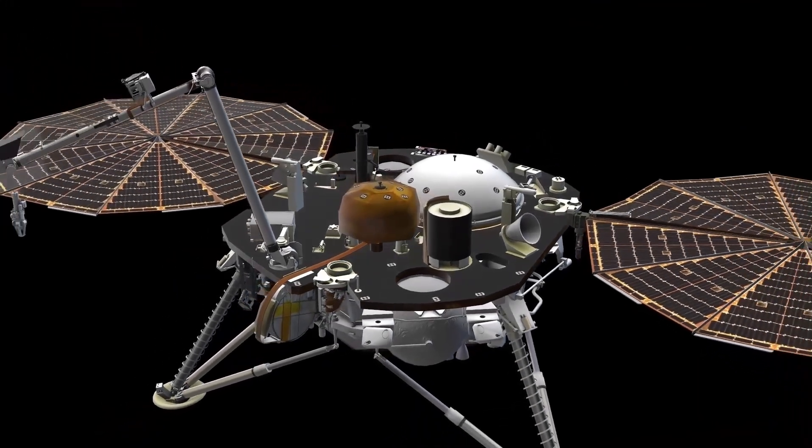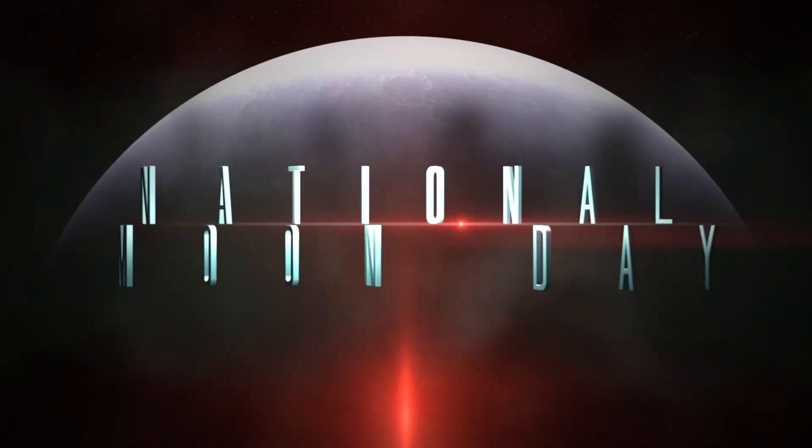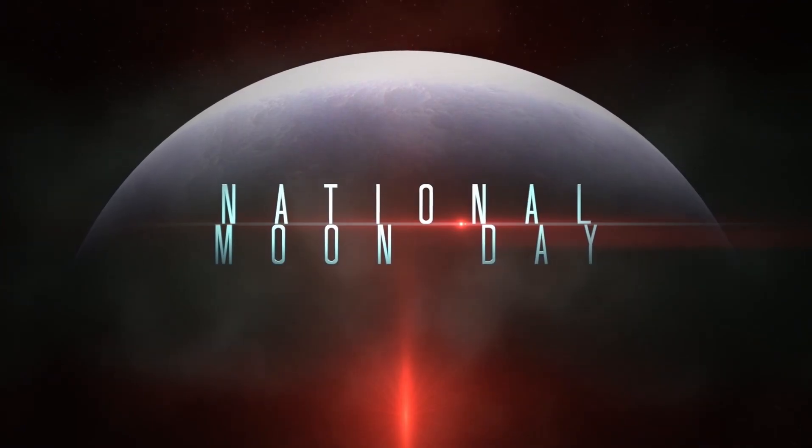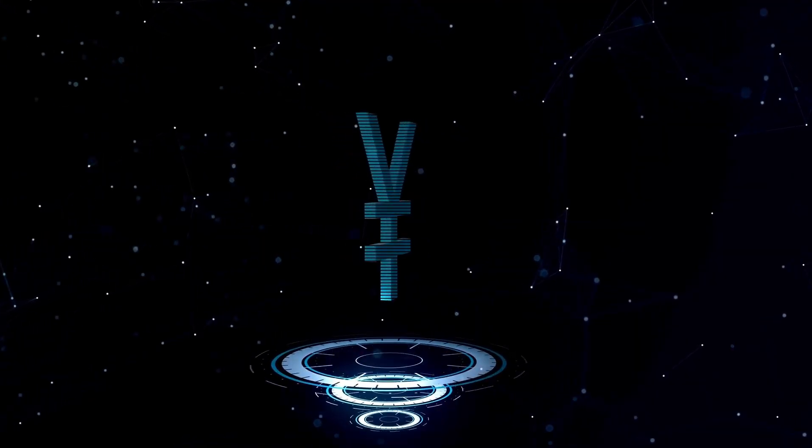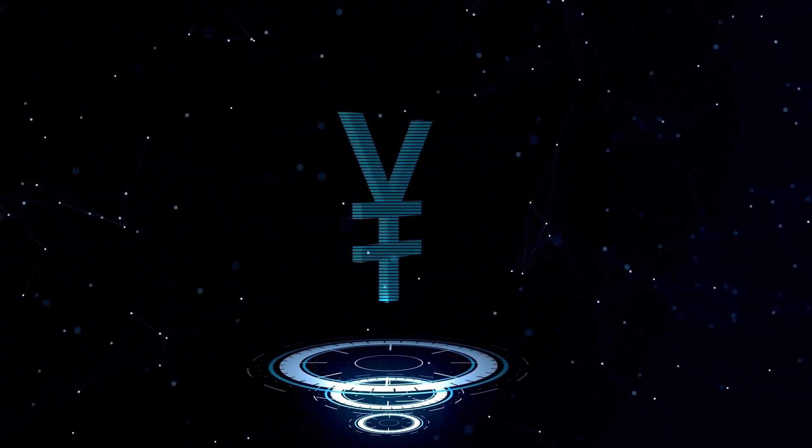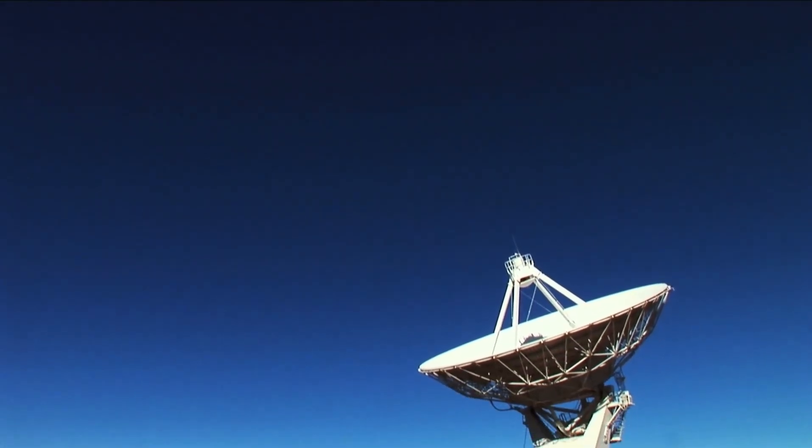In a groundbreaking announcement in 2013, NASA confirmed that Voyager 1 had officially entered interstellar space. This vast region, situated beyond the influence of the Sun's particles and magnetic fields, represents a transition from the solar system into the broader galaxy. Five years later, in 2018, Voyager 2 also crossed this boundary, reaching a distance of approximately 17.7 billion kilometers from the Sun.